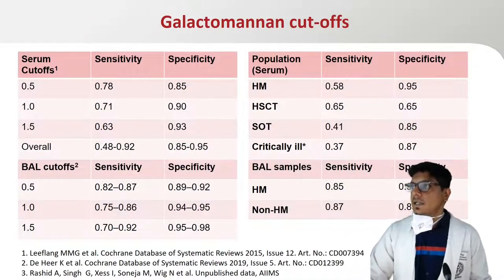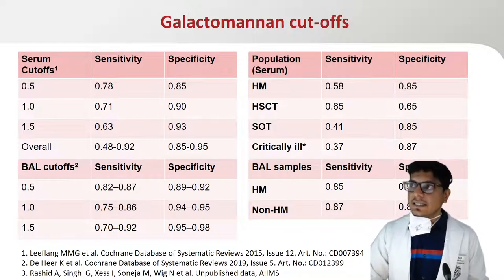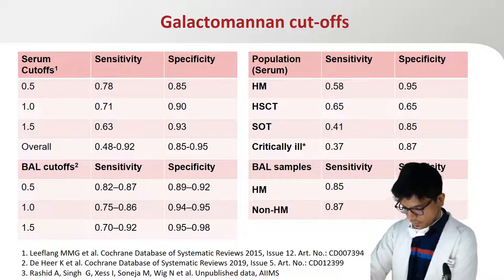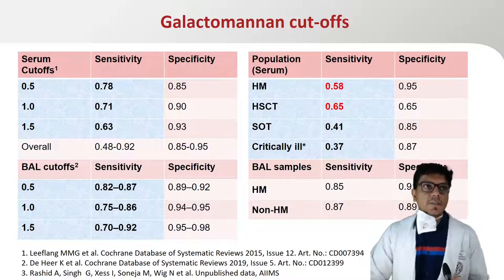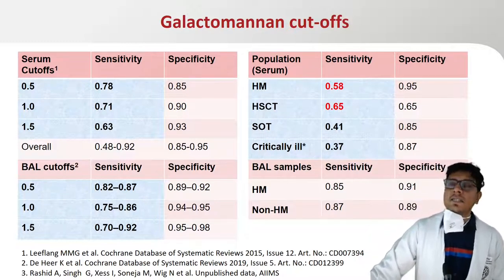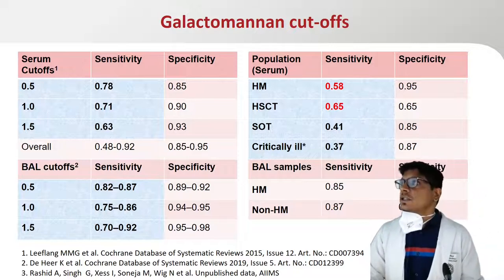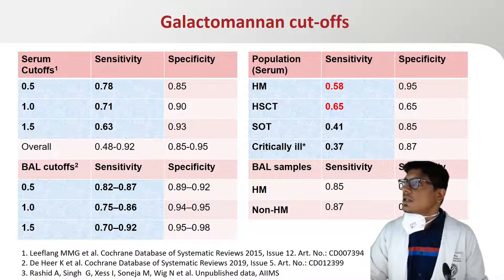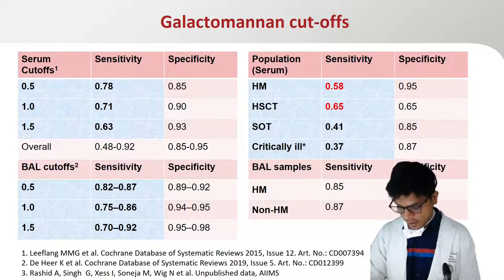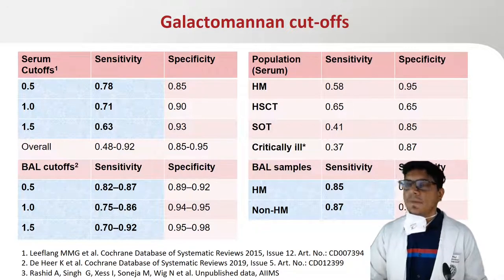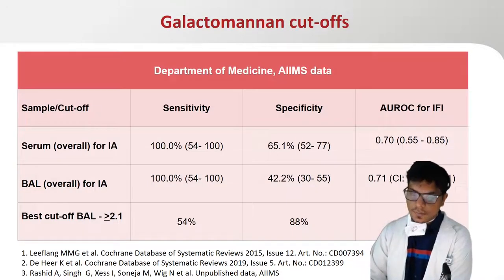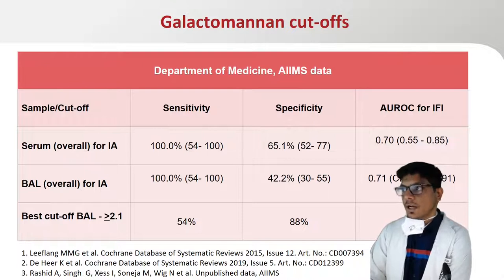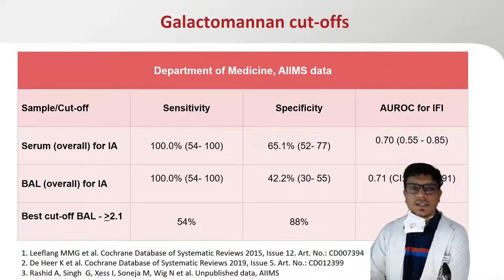Overall, serum Galactomannan is less sensitive than BAL Galactomannan, and as cutoffs increase, sensitivity drops. In patients with hematological malignancy or transplant settings with underlying neutropenia, sensitivity for serum Galactomannan is quite good. For critically ill patients without neutropenia, sensitivity is quite poor. However, BAL Galactomannan compares similarly between neutropenic and non-neutropenic patients. In our data, overall sensitivity in serum and BAL is quite good, but specificity is poor, and the best cutoffs for BAL Galactomannan are higher than EORTC-recommended cutoffs.